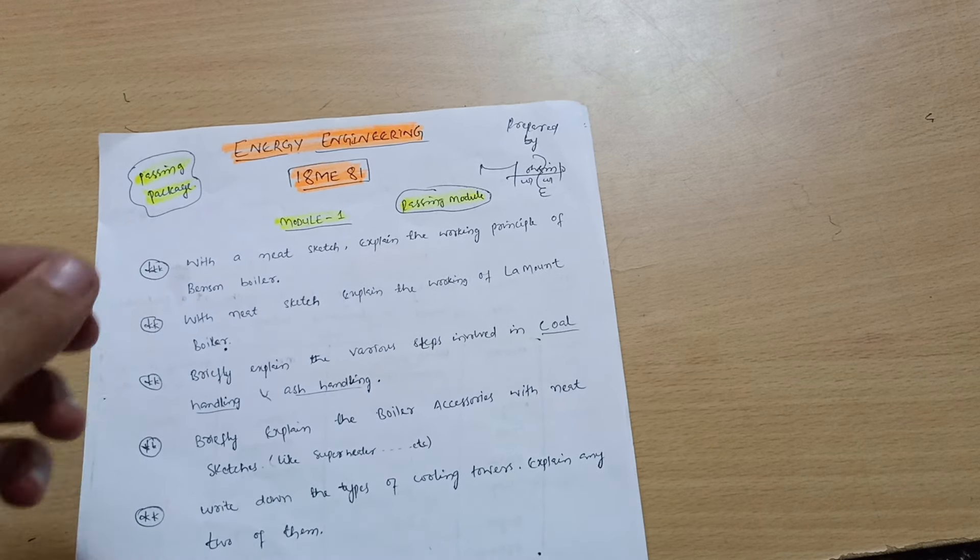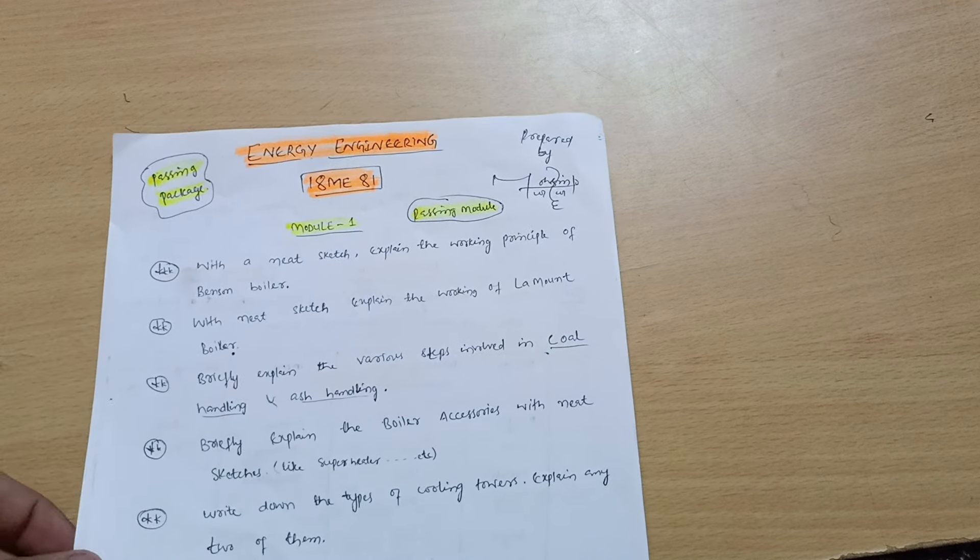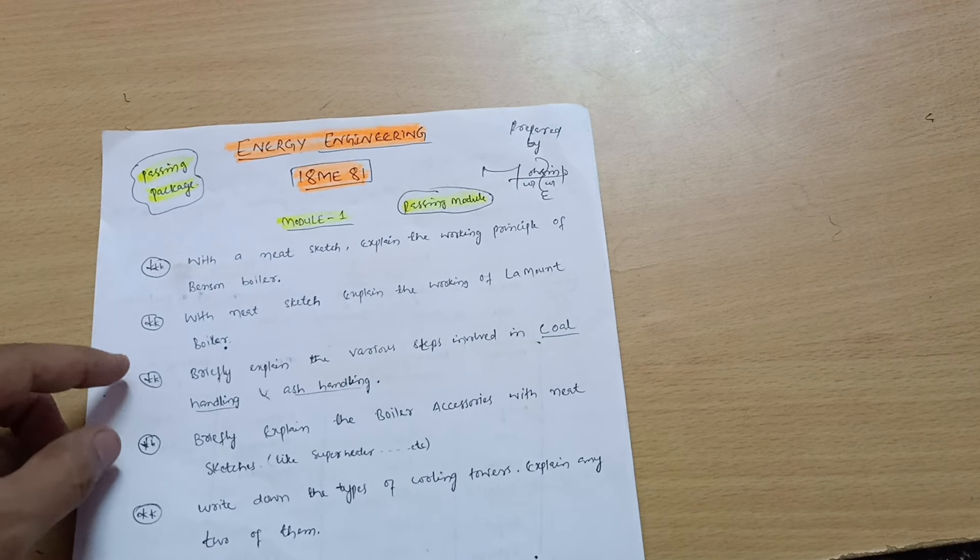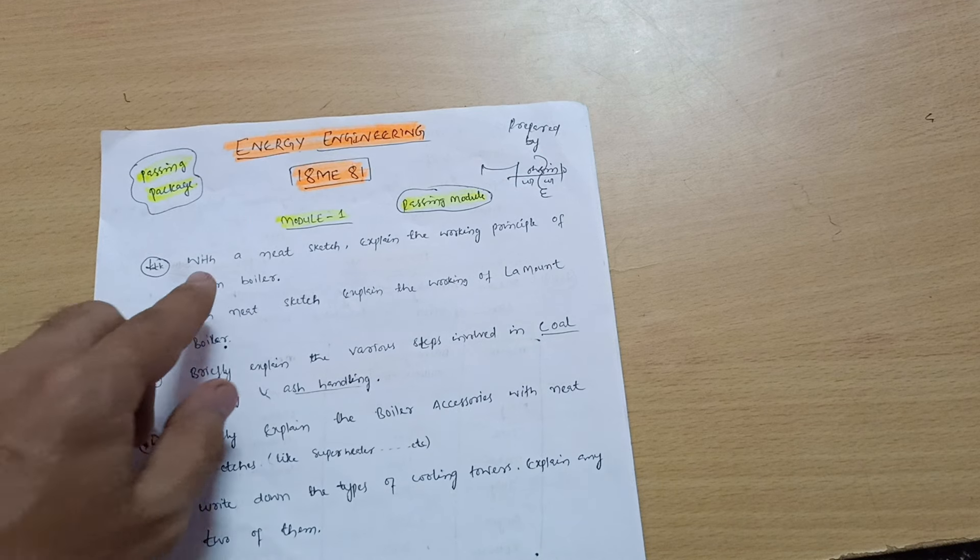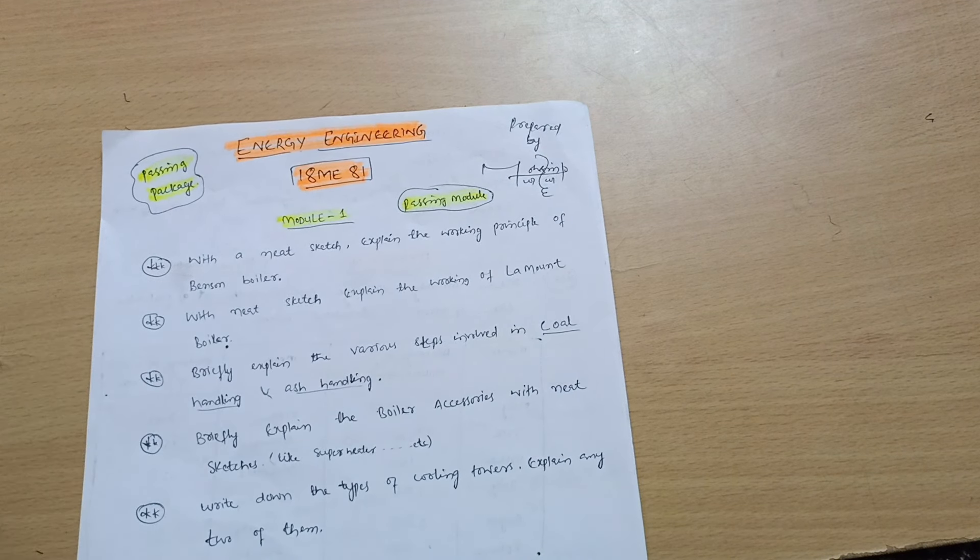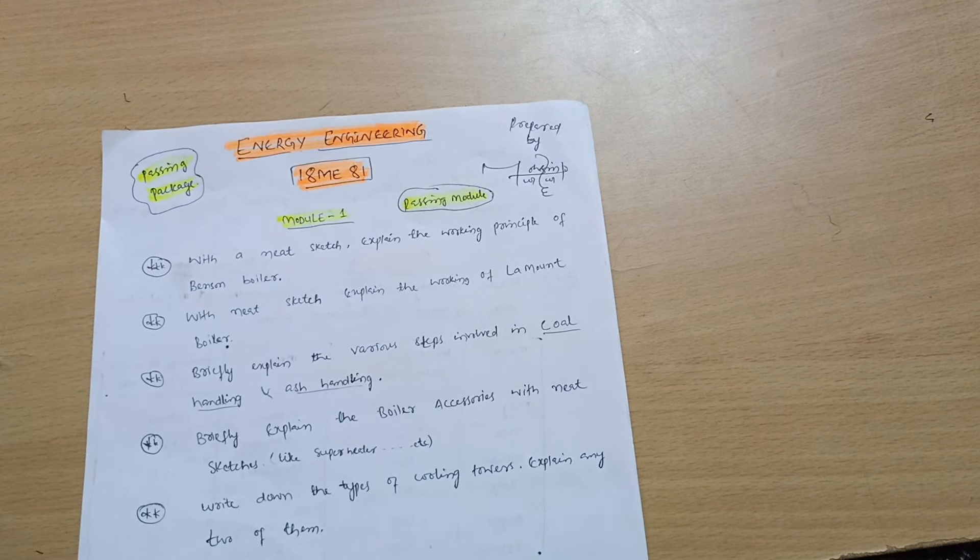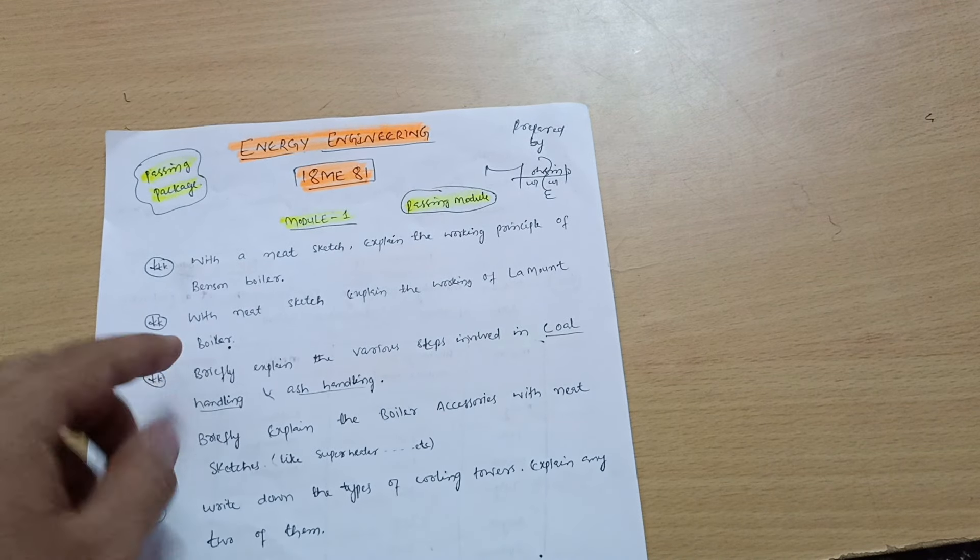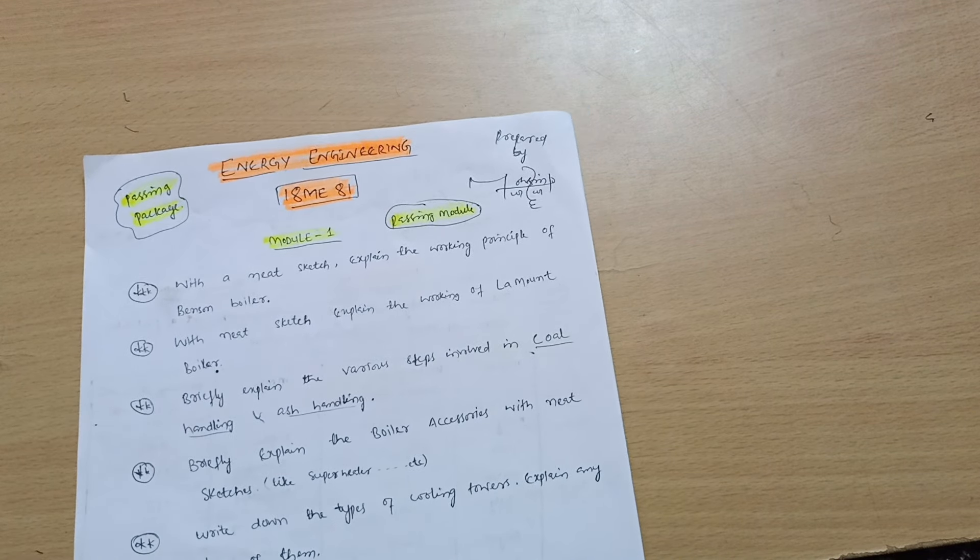Without wasting any time, let me start with the basic passing module, which is Module 1. You have to cover only five questions. With neat sketch explain the working principle of Benson boiler. With neat sketch explain the working of Lamont boiler. There are five types of boilers, especially these two are the most important ones which you have to focus on.